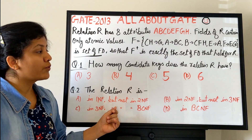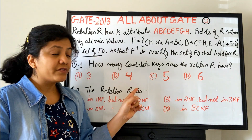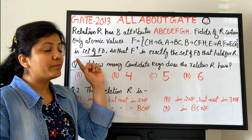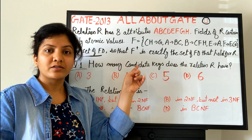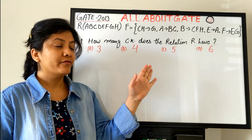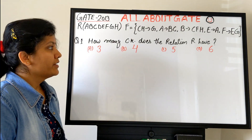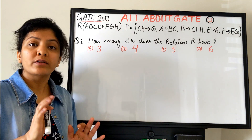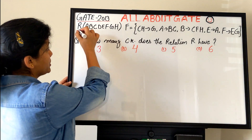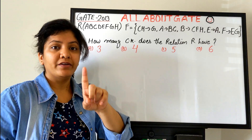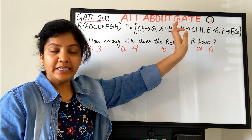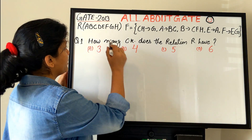Let's quickly solve this question. I have the data on the board. To find all candidate keys, start by looking at all the attributes and checking whether they are present in your FD set or not. We have A, B, C — do we have D? No. E yes, F yes, G yes, H yes.